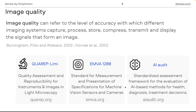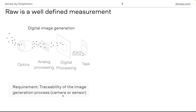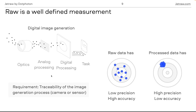One of the most important things is to understand how the data was captured and what application you want to perform. For digital image generation, the typical process is: photons arrive at the optics, are converted into electrons, go through analog and digital processing, and then the final task is performed. If you understand how the image was formed and can trace its generation from the sensor or camera, you have a good understanding of the distribution and the uncertainties that come with it. This is why RAW is a well-defined measurement — because we know how it was generated and can quantify the uncertainties.